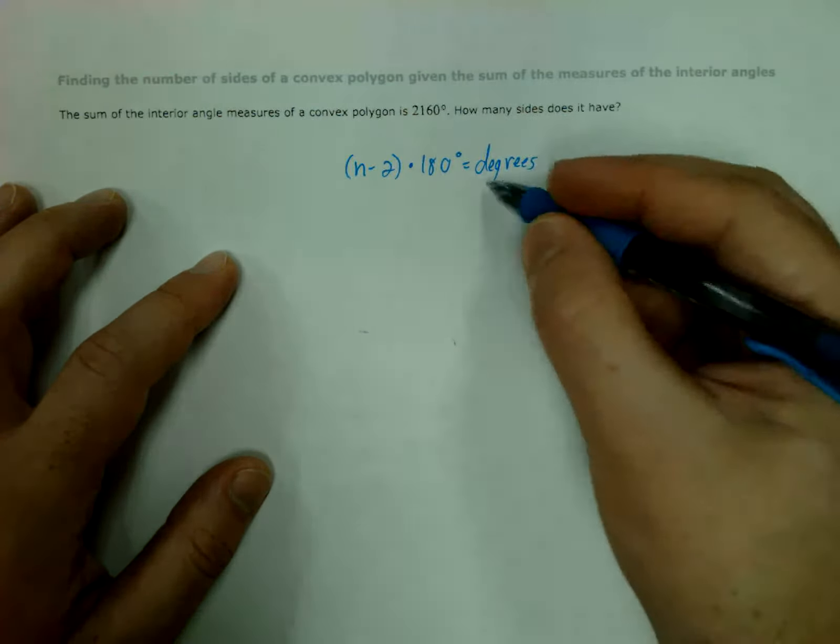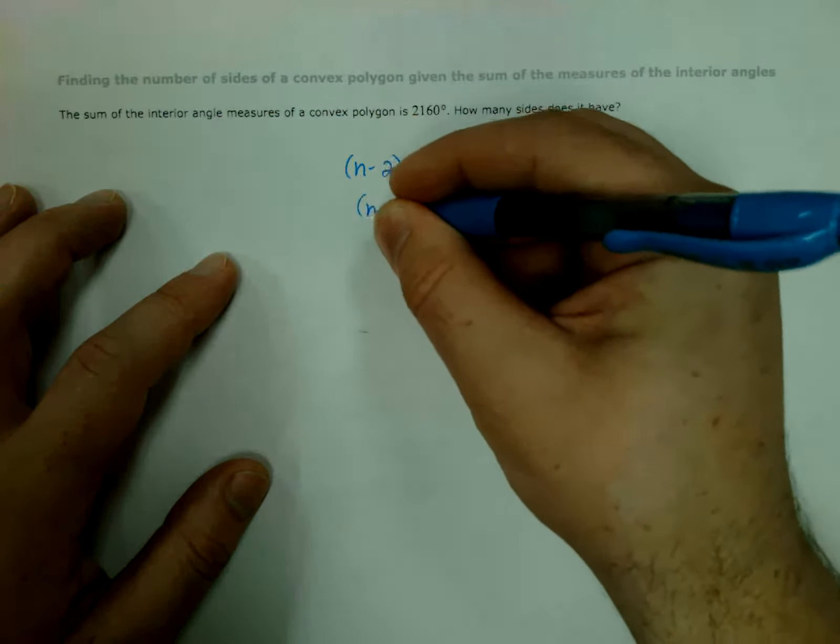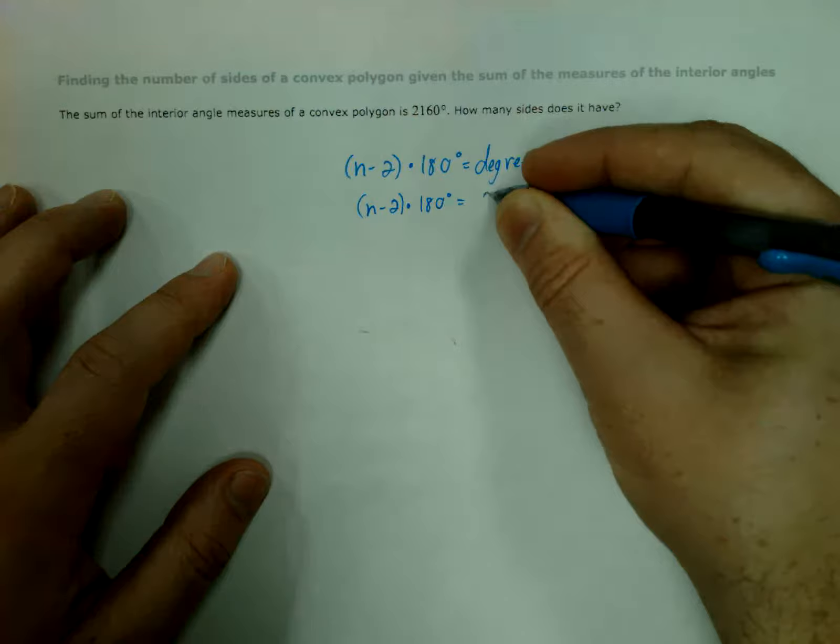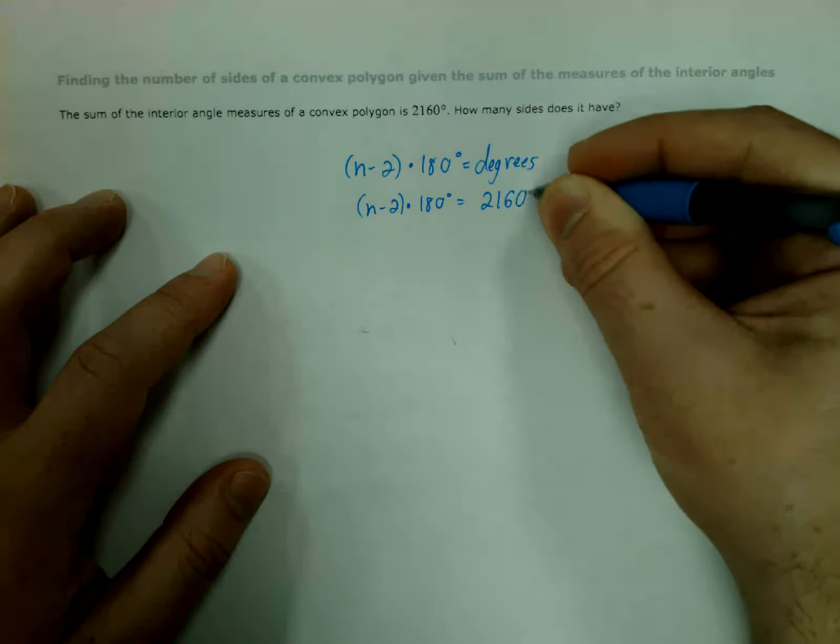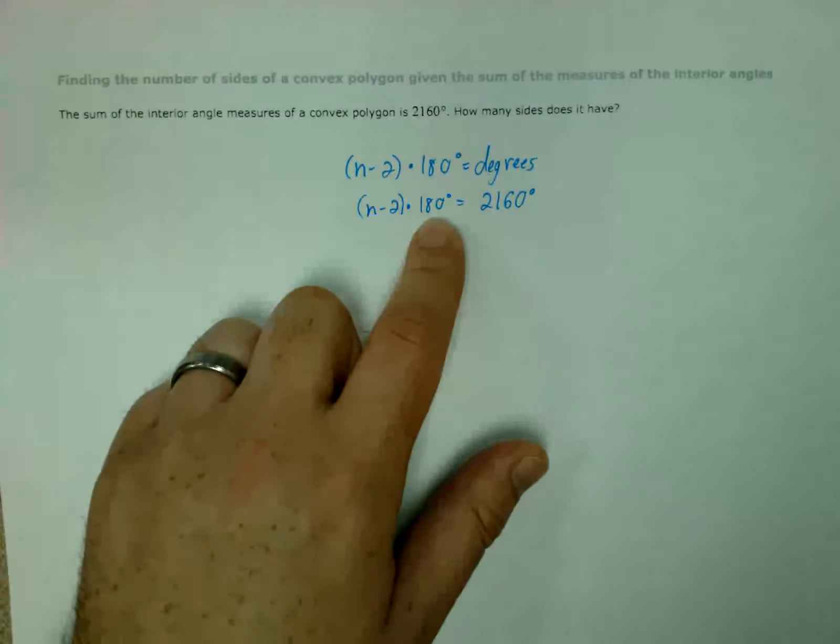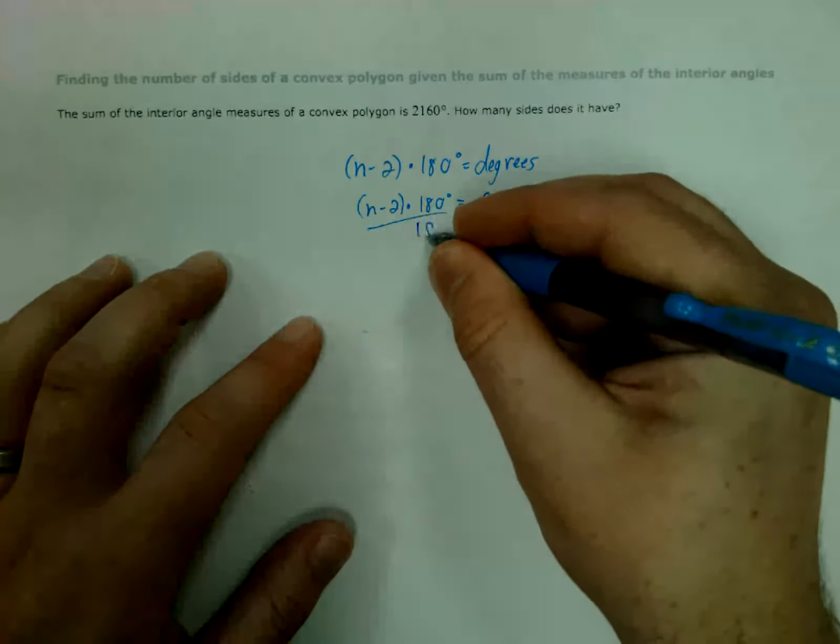So I know the number of degrees, so that's what's going to go here. So n minus 2 times 180 degrees equals 2,160 degrees, all right? So we just need to go ahead and divide this off. So 2160 divided by 180, divide both sides here.